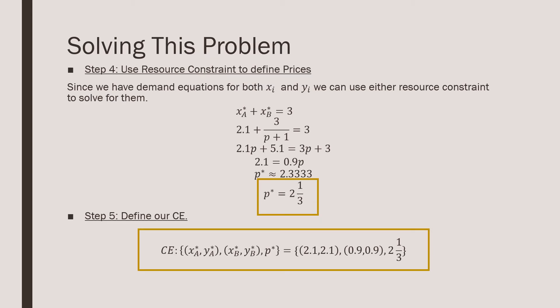Step number four is that we're going to use our resource constraint to define prices. Since we have our demand equations, our proper Marshallian demand equations for both xi and yi, we can use either the resource constraint to solve for them. And we just plug them in there, and working with a little bit of algebra, we find that the prices that support this equilibrium is going to be 2.3333.